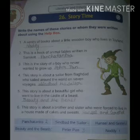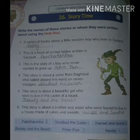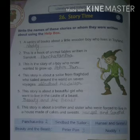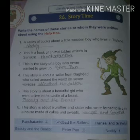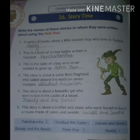Fourth question: this story is about a sailor from Baghdad who sailed around the world on seven voyages. The answer is Sindbad the Sailor. Fifth question: this story is about a beautiful girl who wants to live in the castle of a beast. The answer is Beauty and the Beast.